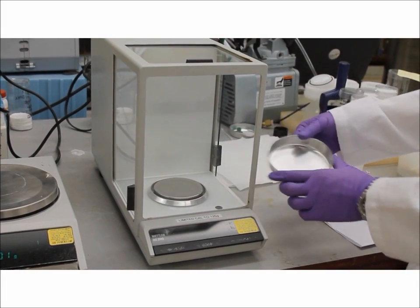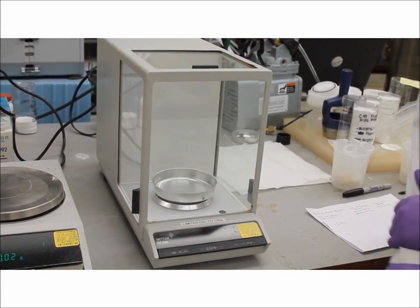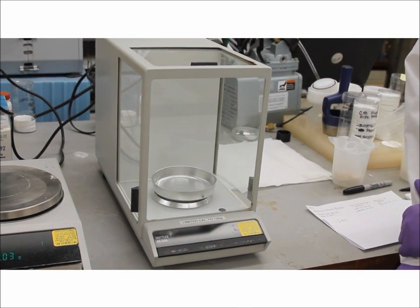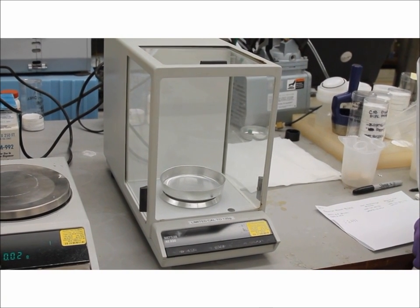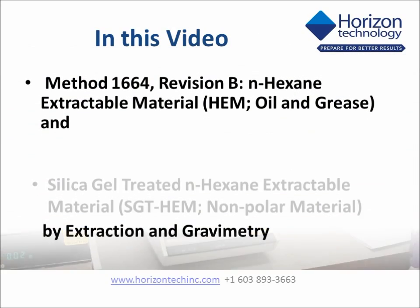This is the end product of concentrating down your SGTHEM portion. As you can see, there's a glossy, oily substance. Now you want to weigh your pan and subtract the initial empty pan value from the full pan value to obtain your gravimetric silica gel treated N-hexane extractable material result.